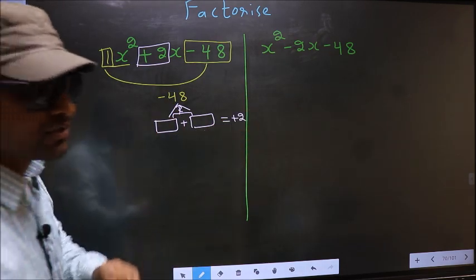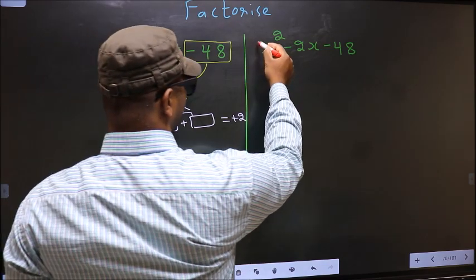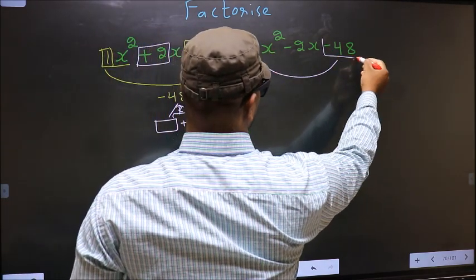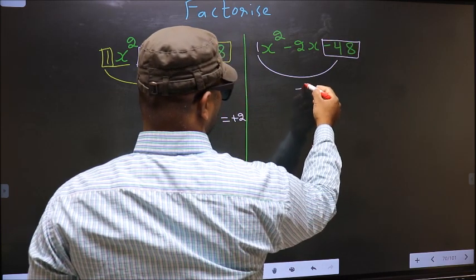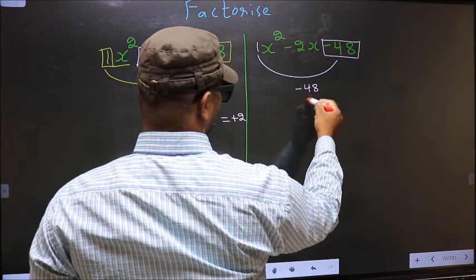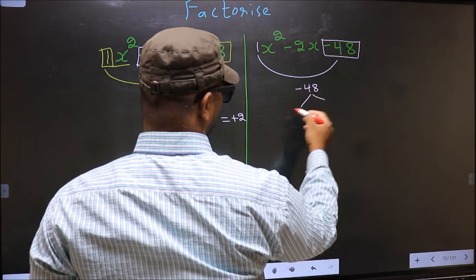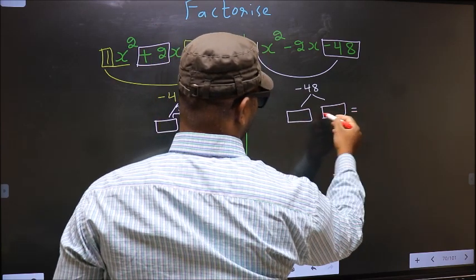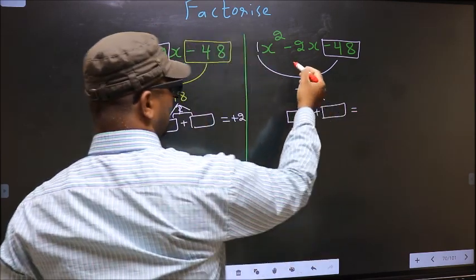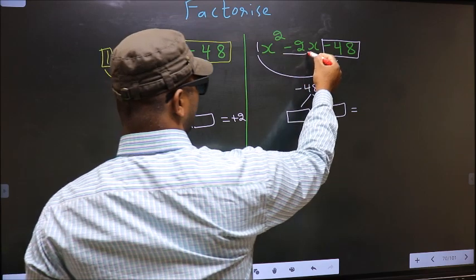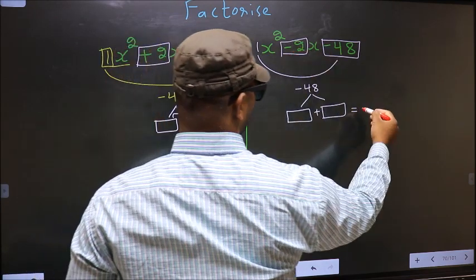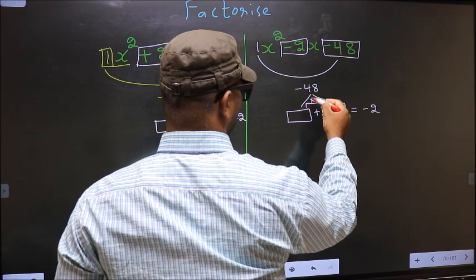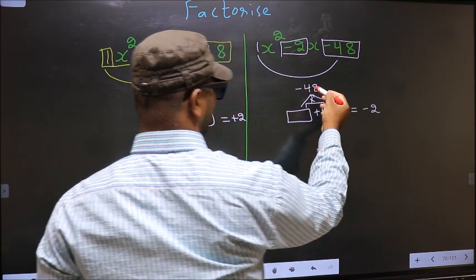Over here also, same — x squared coefficient 1 multiplied by minus 48, you get minus 48. Now look out for two numbers such that when you add them, you should get the middle coefficient minus 2, and also when multiplied, you should get minus 48.